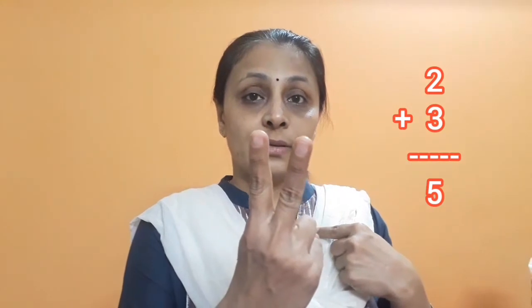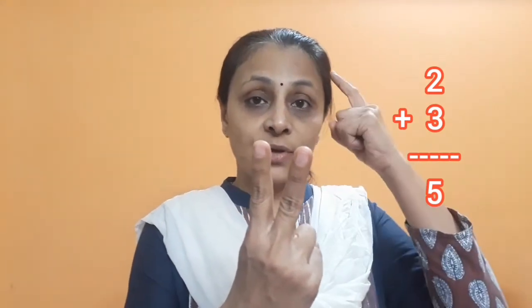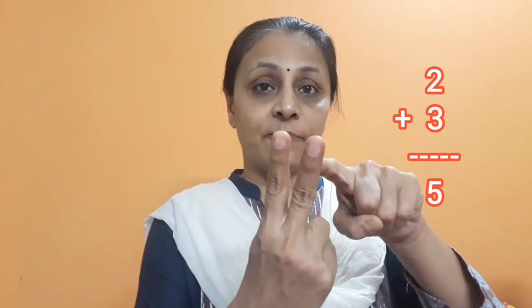Suppose we have 2 plus 3. As I have told you, the bigger number you are going to keep in your mind and the smaller number we will keep on our fingers. So, here 3 we are going to keep in our mind and 2 on the fingers. After 3: 4 and 5. So, the answer will be 5. That way we are going to count.